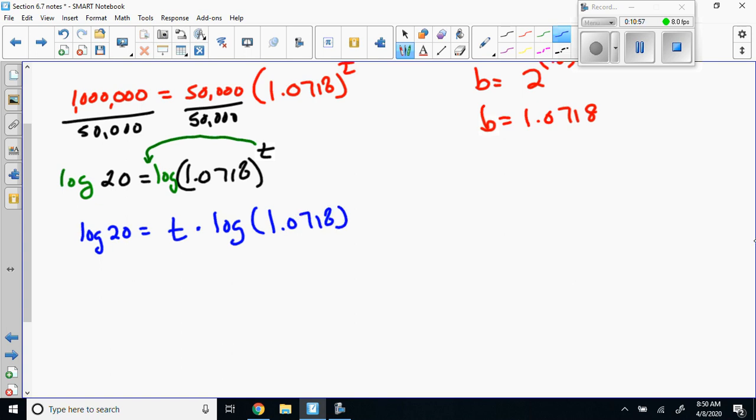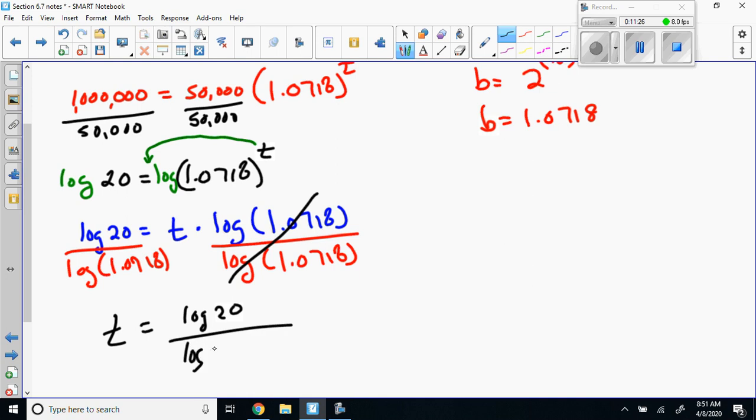Now we're going to divide both sides by the log of 1.0718. This leaves me with t equals the log of 20 divided by the log of 1.0718, and when you do that you get 43.2038.